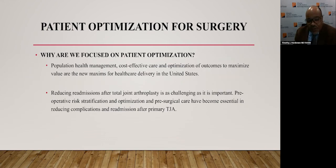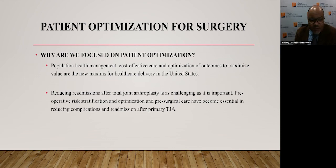A 2018 study in the Journal of Arthroplasty evaluated whether implementation of perioperative screening criteria lowers infection and complication rates following elective THA and TKA in the veteran population. Overall complication rates reduced from 35.14% to 14.8%, with TKA complications reducing from 33.1% to 15% and THA complications reducing from 42.4% to 14.2%. Combined TKA and THA infection rates decreased from 4.4% to 1.3%. So why are we focused on patient optimization? Population health management, cost-effective care, and optimization of outcomes are the new maxims for healthcare delivery. Preoperative risk stratification, optimization, and pre-surgical care have become essential in reducing complications and readmission after total joint arthroplasty.